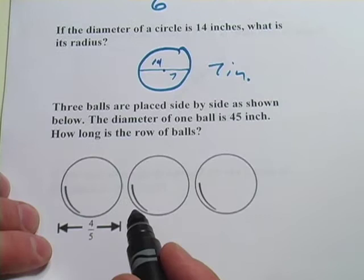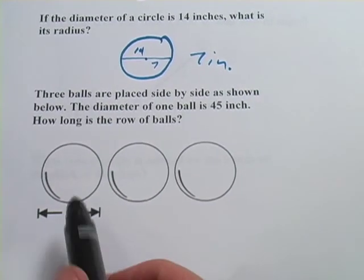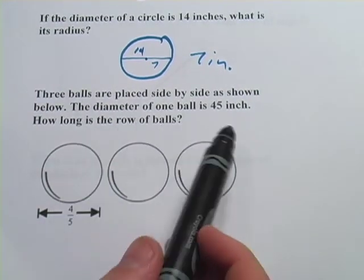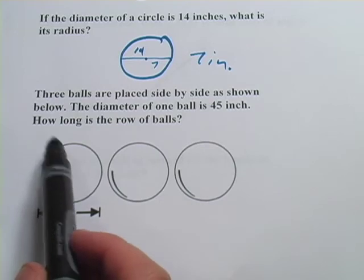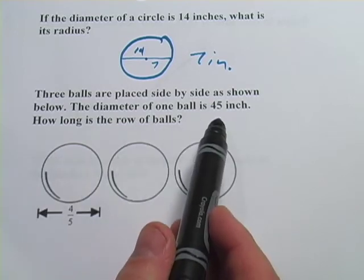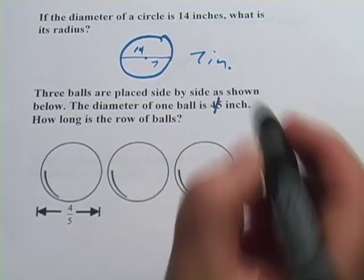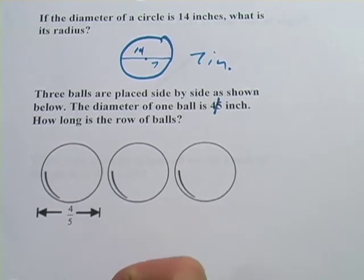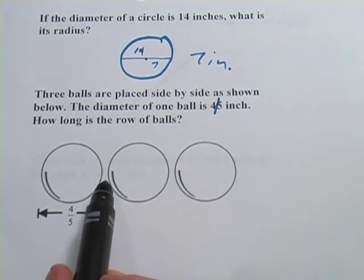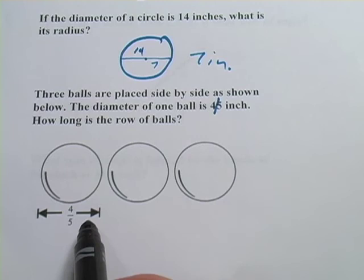And one more. This one, a little trickier. It says, three balls are placed side by side as shown below. The diameter of one ball is 4 fifths of an inch. How long is the row of balls? And actually, they show them here with a little bit of space in between, but I don't think they meant to do that. I think they're all snugged up right next to each other.